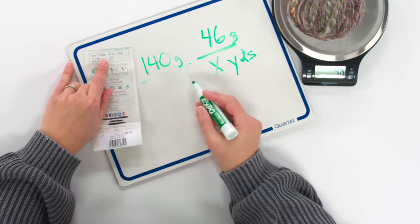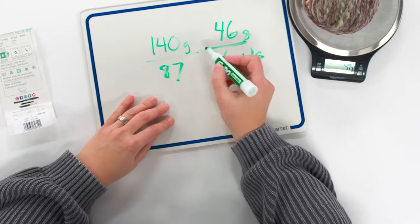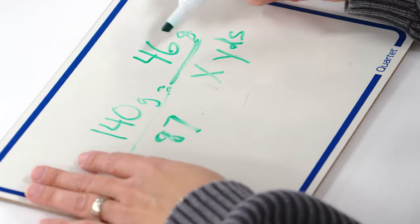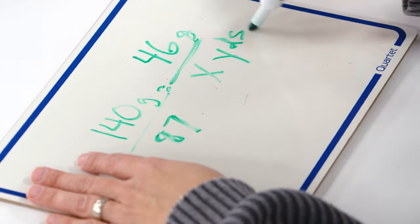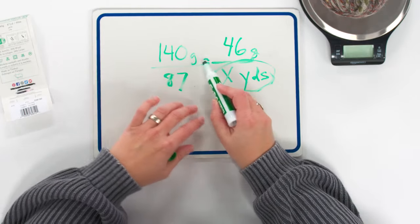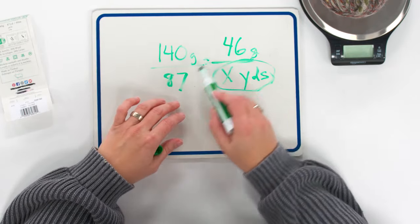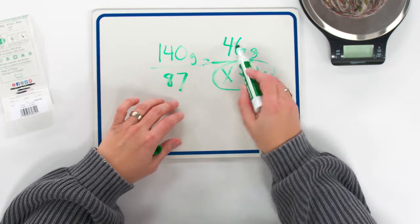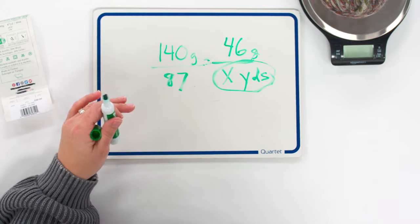If you don't have your label but can remember the name of the yarn, it's definitely worth a Google search to see if you can find that information online. Almost always you can find it. All you need to know is how much the original ball weighed, either in grams or ounces, and how many yards or meters you started with.